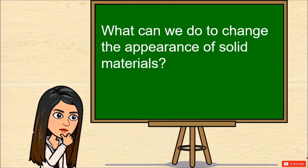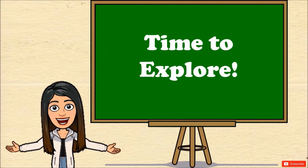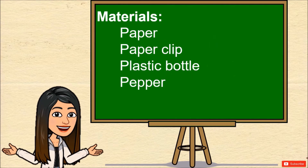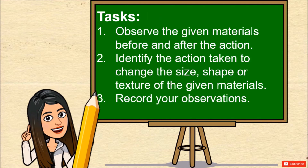Now, let's get back to our question: What can we do to change the appearance of solid materials? It's experiment time! Time to explore. Time to wonder. For this experiment, we will be needing the following materials: paper, paper clip, plastic bottle, old peppers, and things which could be found around them which may be helpful in changing the appearance of solid materials.